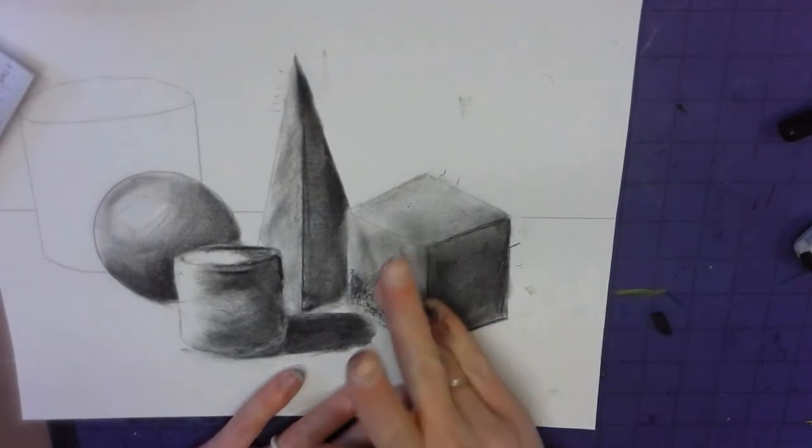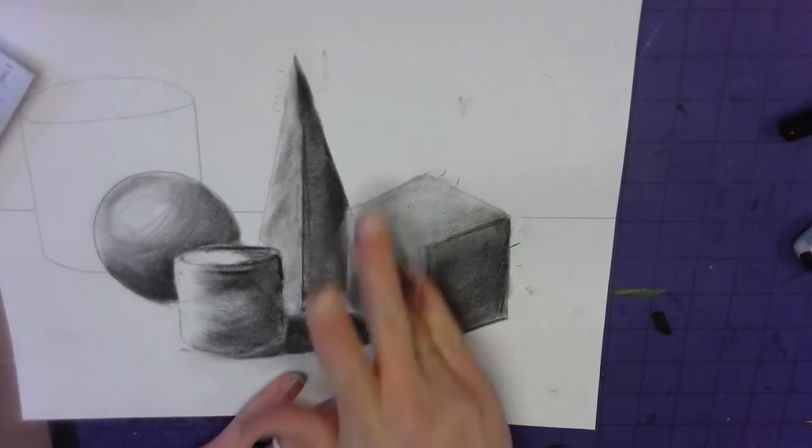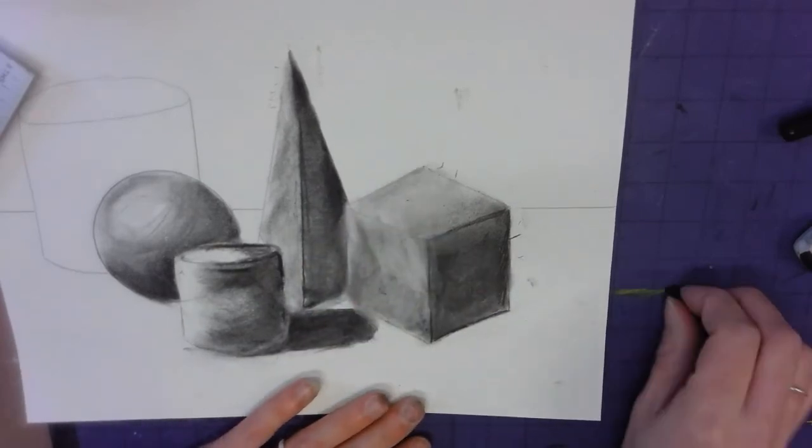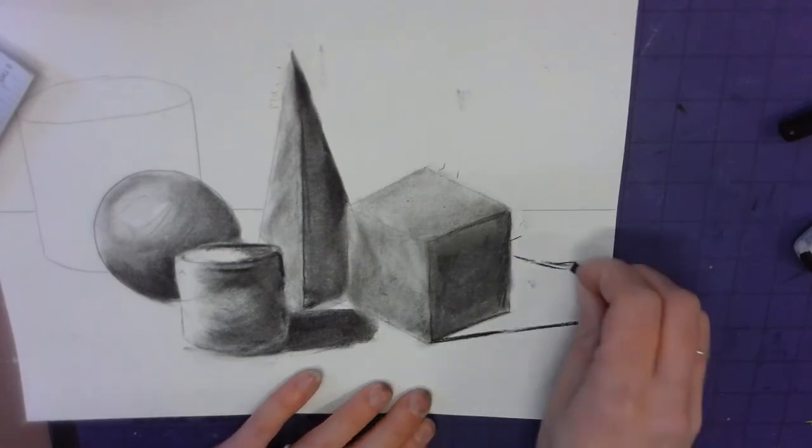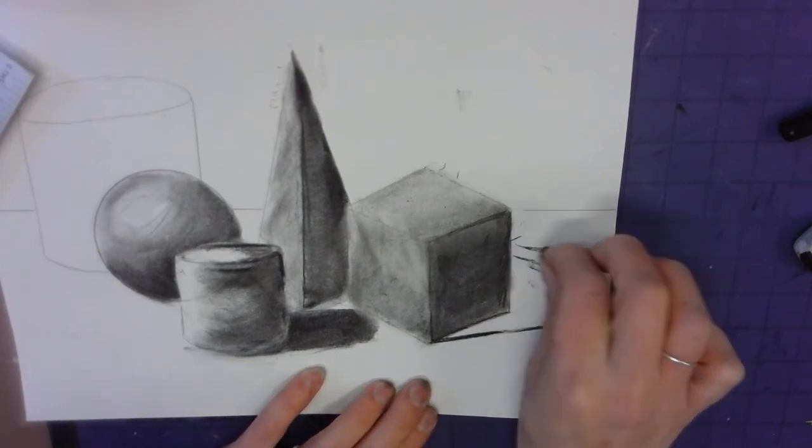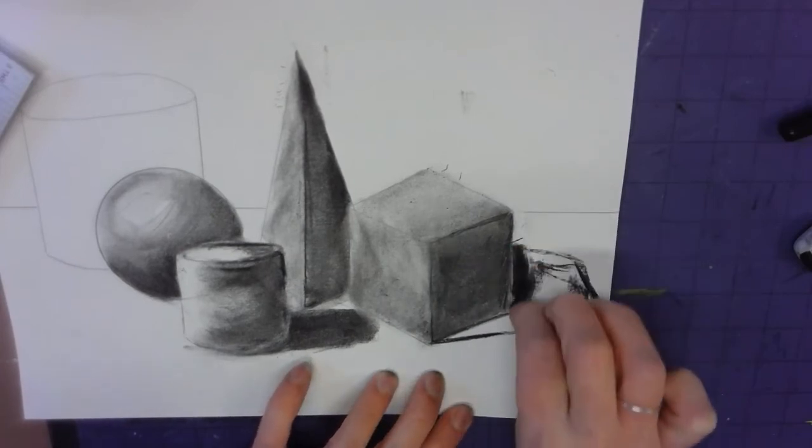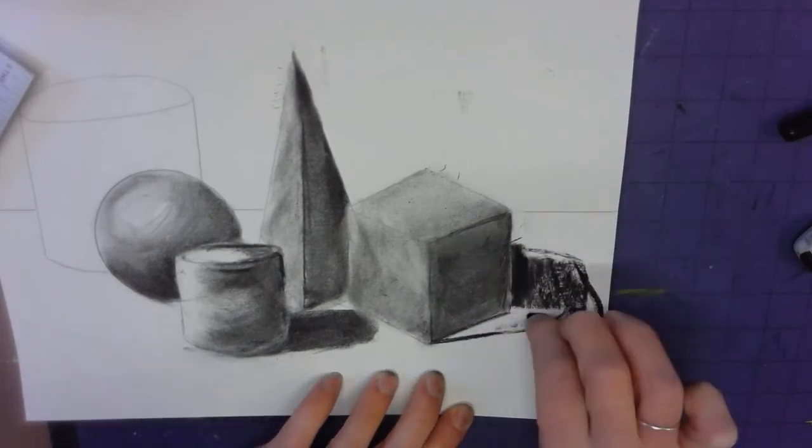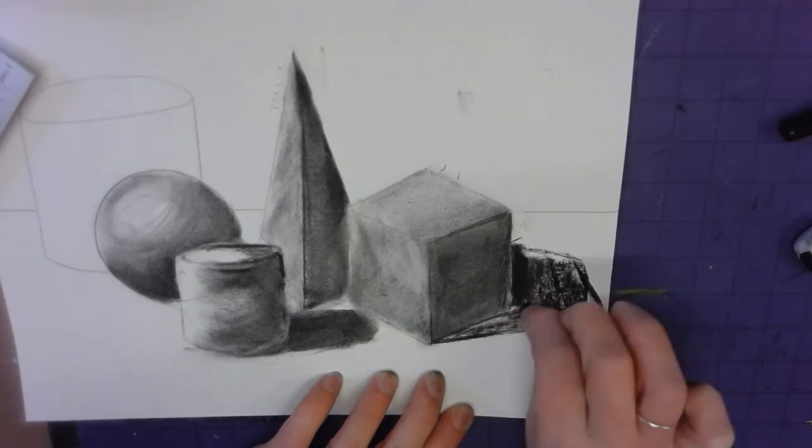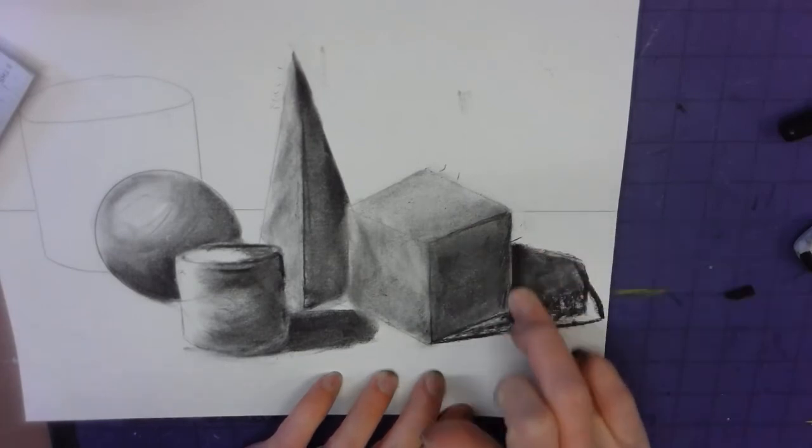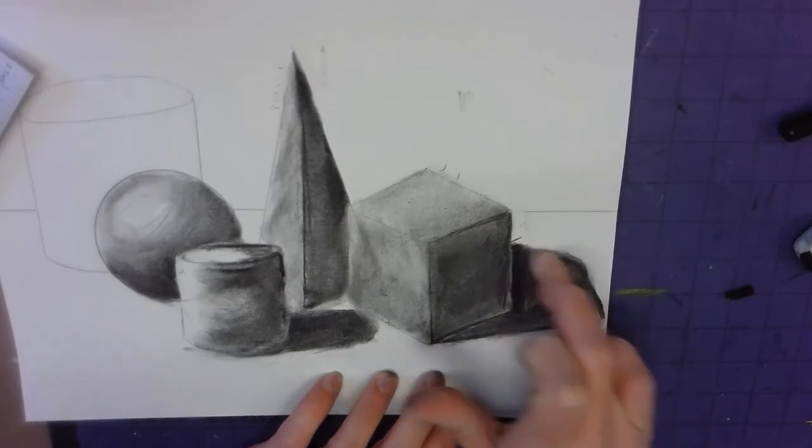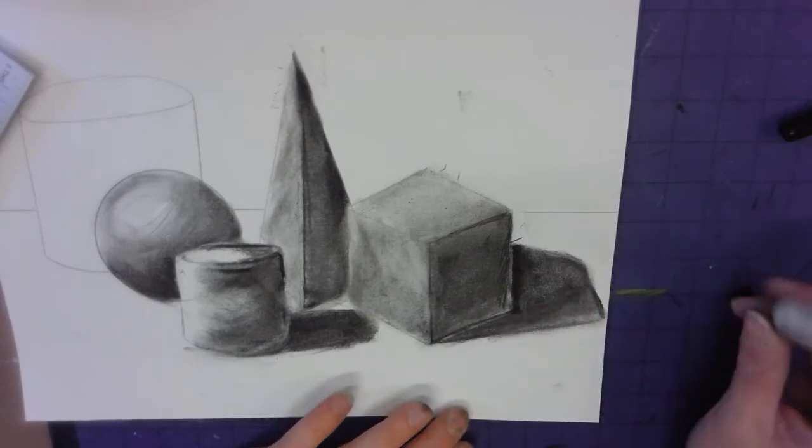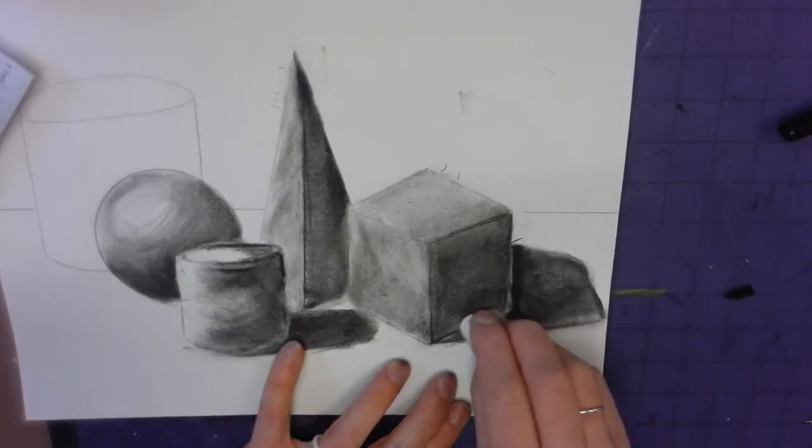And I'm missing on my cube now is my cast shadow. So that's the shadow that goes onto the table. Make it dark. Of course, the reflected light at the bottom.